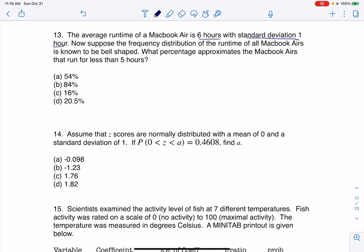Now suppose the frequency distribution of the runtime of all MacBook Airs is known to be bell-shaped. So we know we're looking at a normal distribution. What percentage approximates the MacBook Airs that run for less than five hours?